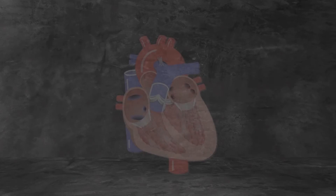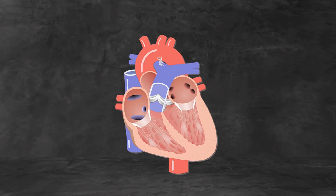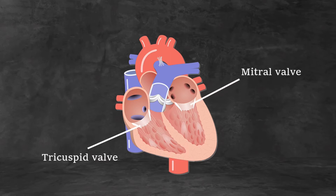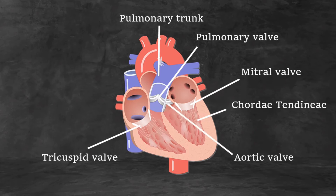Your heart has four valves that keep your blood moving in the correct direction by opening only one way and only when they need to. Two valves sit like doors between your atria and ventricles to prevent blood from flowing backward into your atria. The tricuspid valve opens into your right ventricle, and the mitral valve opens into your left ventricle. Strong thin tissues called chordae tendineae hold your valves in place during the forceful contractions of your ventricles. Blood leaving the ventricles passes through another set of valves: the pulmonary valve between your right ventricle and pulmonary trunk, and the aortic valve connecting your left ventricle and aorta.